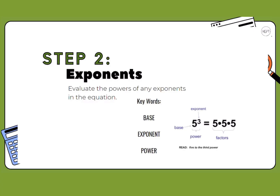Step two is all about exponents — we want to evaluate any exponents in the equation. The base is the larger number, written multiple times. The exponent is the smaller number, elevated and touching the base; it tells us how many times we write the base. You would say the base number 'to the whatever the exponent is' — for example, five to the third power.